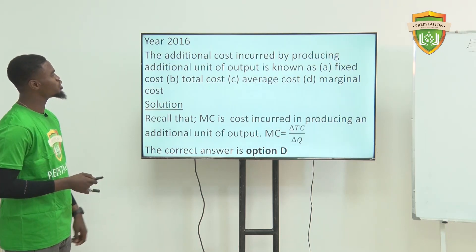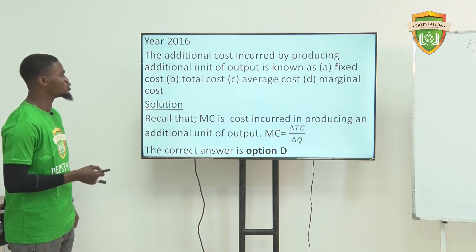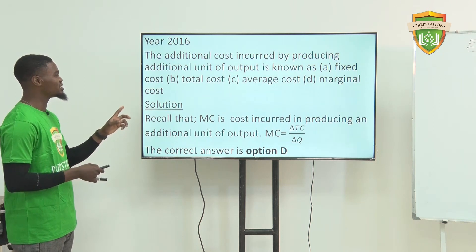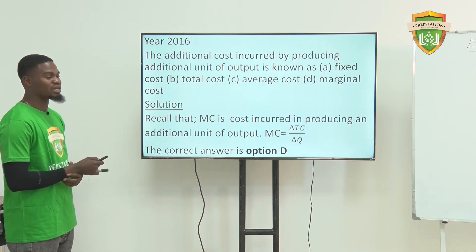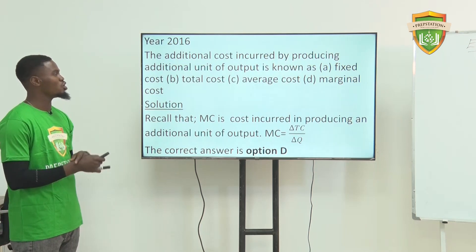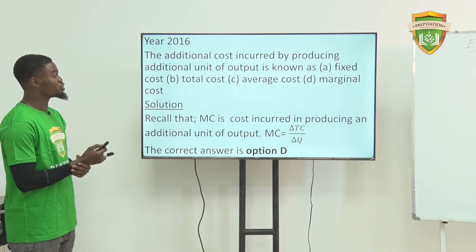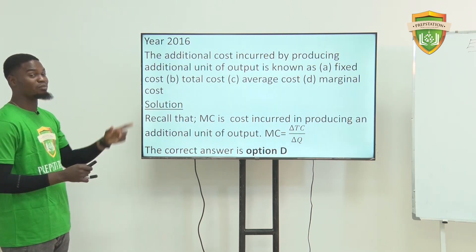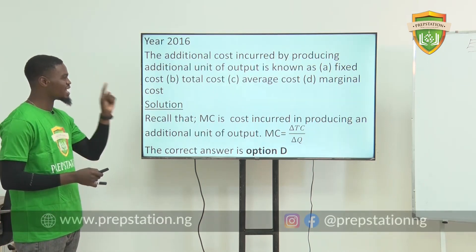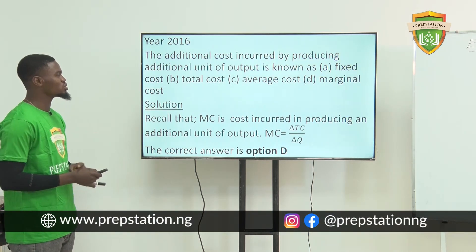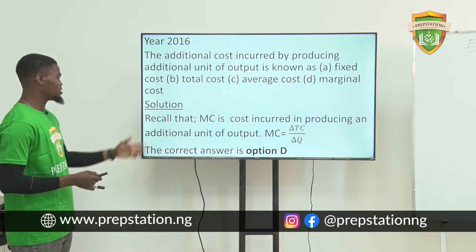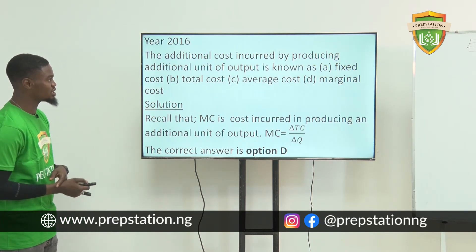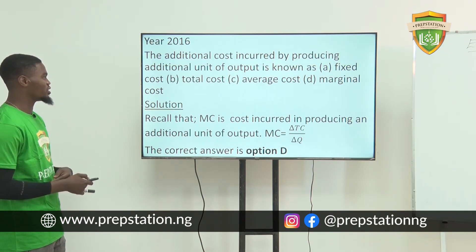In 2016, the additional cost incurred by producing additional units of output is known as what? Fixed cost has to do with cost that remains unchanged regardless of the level of output. Total cost has to do with the total cost incurred in the process of production. Average cost has to do with the cost per unit of output. Marginal cost has to do with the additional, extra cost incurred in producing one more unit of a commodity. So the appropriate answer is option D, which is marginal cost.